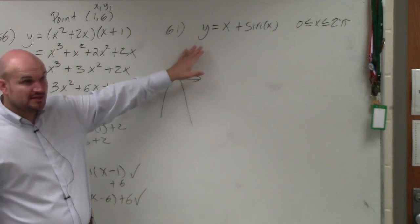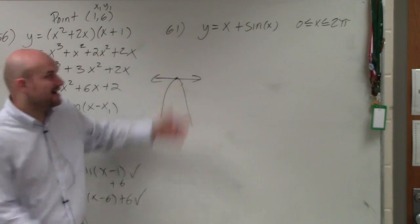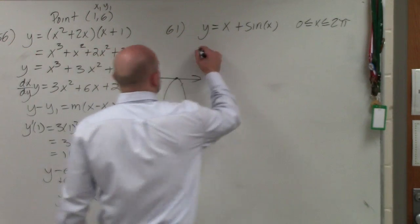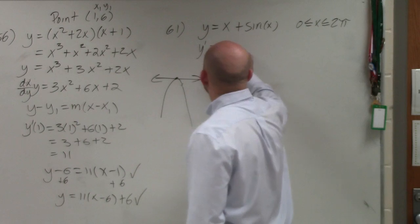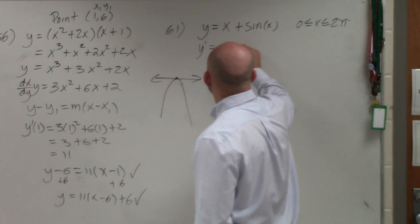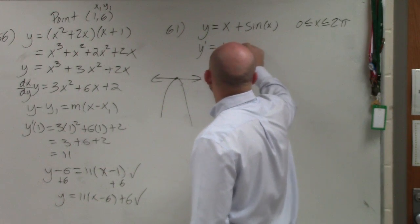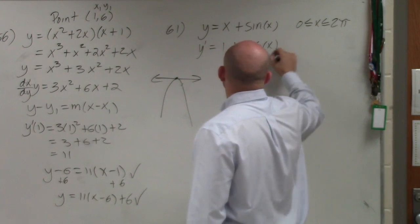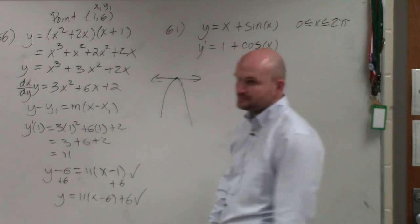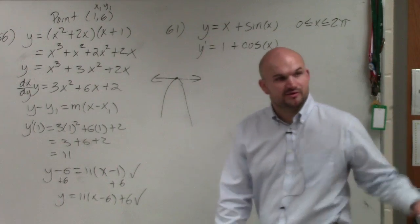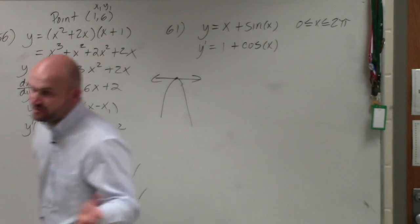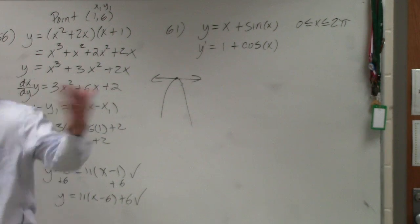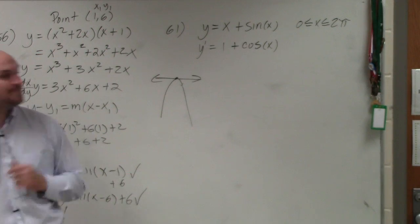The first thing we need to do is find the derivative. So y prime equals 1 plus cosine of x, because the derivative of sine is cosine, and the derivative of cosine is negative sine.